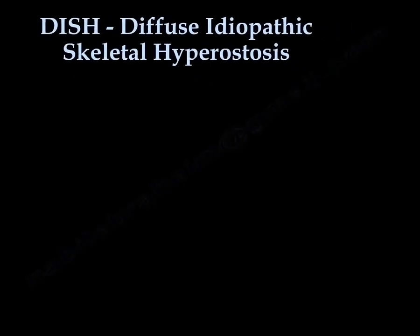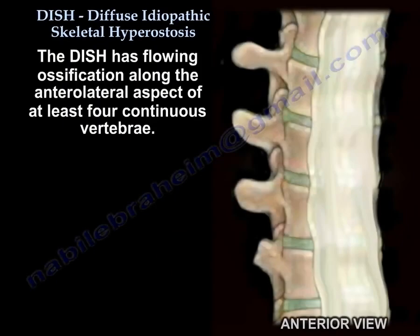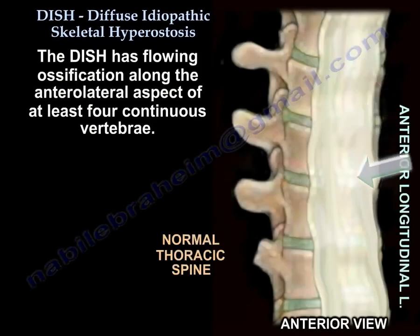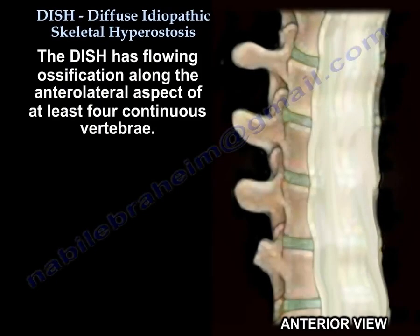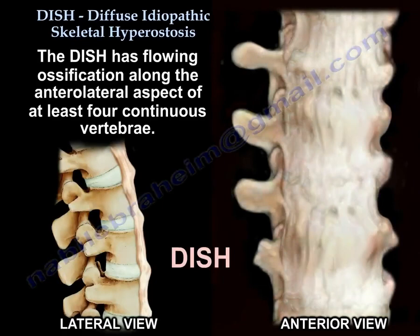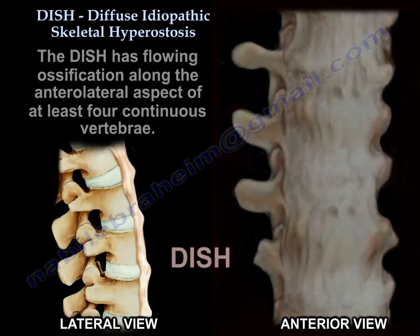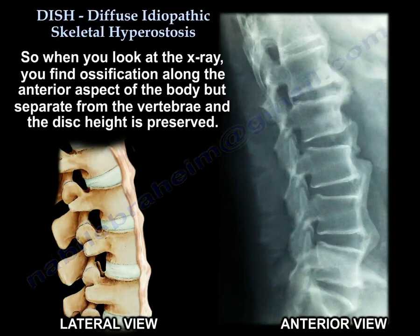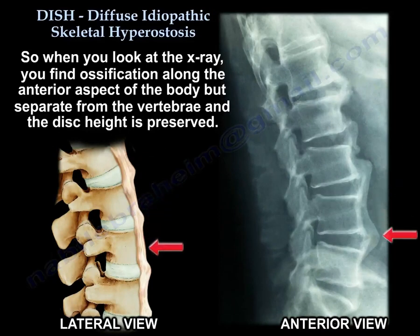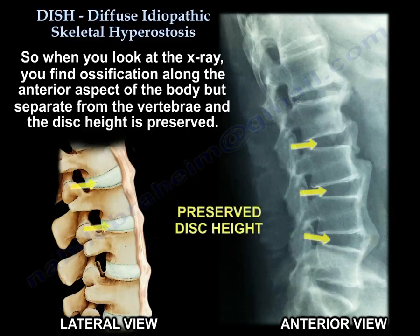DISH — Diffuse Idiopathic Skeletal Hyperostosis. DISH has flowing ossification along the anterolateral aspect of at least four contiguous vertebrae. When you look at the X-ray, you find ossification along the anterior aspect of the body but separate from the vertebrae, and the disc height is preserved.